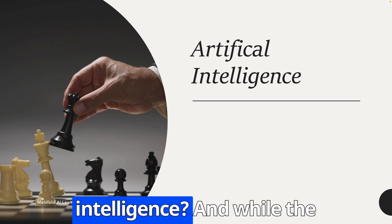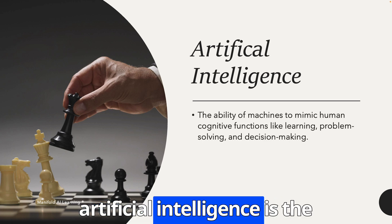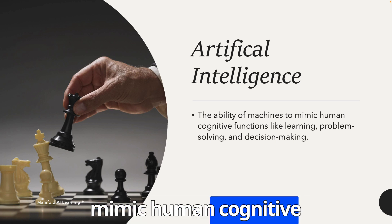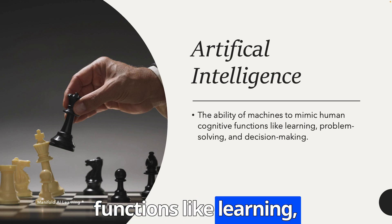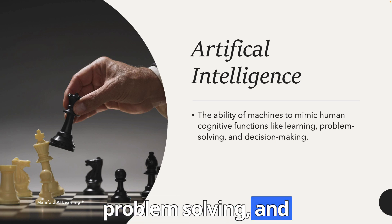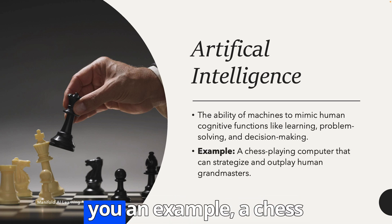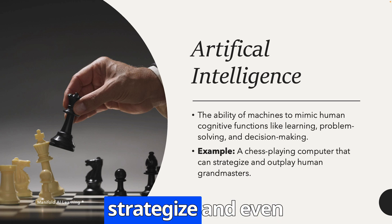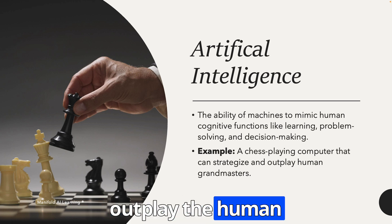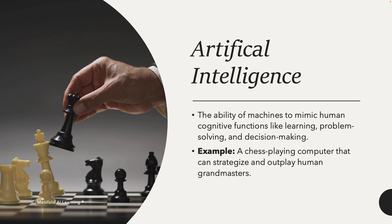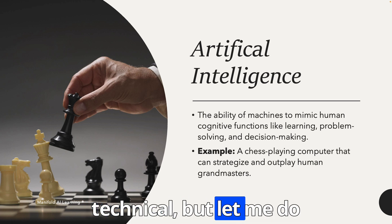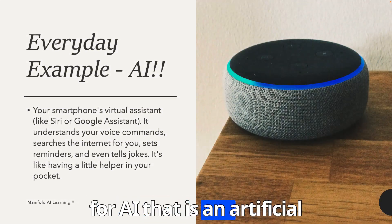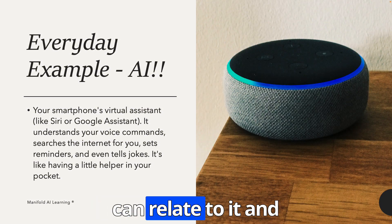The first thing we are going to learn is artificial intelligence. Artificial intelligence is the ability of machines to mimic human cognitive functions like learning, problem solving, and decision making. To give you an example, a chess-playing computer that can strategize and even outplay human grandmasters. Let me give you an everyday example so that you can relate to it.